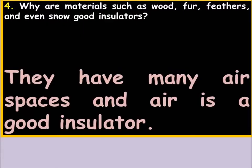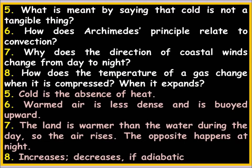Why are materials such as wood, fur, feathers, and even snow good insulators? They have many air spaces, and air is a good insulator. When something is a poor conductor, it's generally because it has air in it — air is the culprit. Air does not conduct heat. It's the air trapped in these articles that makes them resistant to heat transfer.